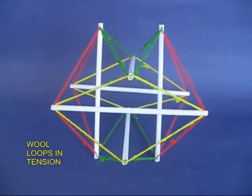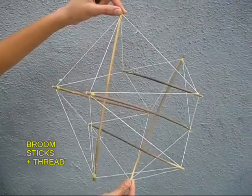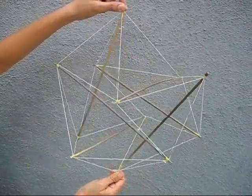You can see that all six stiff straws are like struts under compression and all six loops of wool are under tension. You can also make this model with broomsticks and thread.